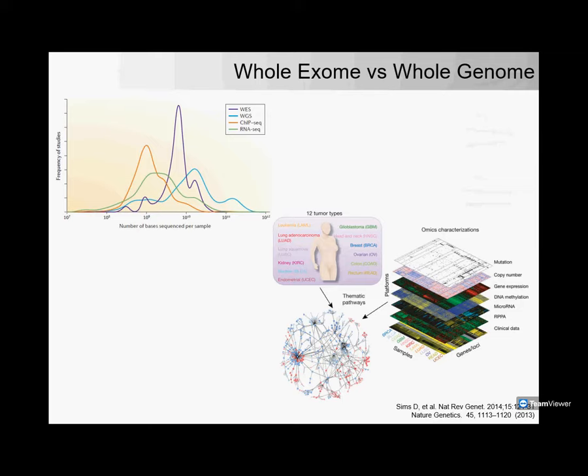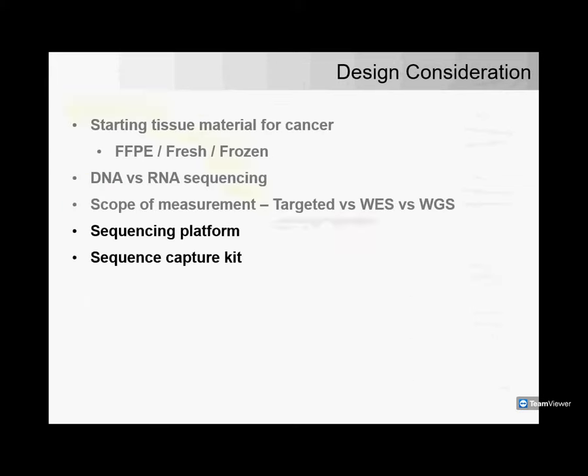Whole exome sequencing seemed like the most commonly used technology and the right first thing to focus on. The other consideration is computational requirement — how much compute power you need to handle the data generated. This includes not only compute power for data analysis, but also the sequencing instrument capacity to provide sufficient high throughput for a reasonable amount of coverage for the targeted region of interest. Based on the lab I collaborate with and available resources, whole exome sequencing was the best starting point.